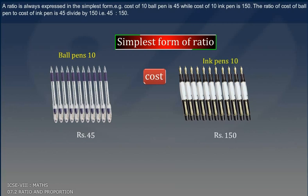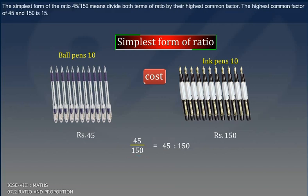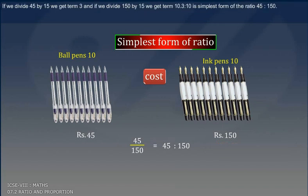The ratio of cost of ball pen to cost of ink pen is 45 divided by 150, that is 45 is to 150. The simplest form of the ratio 45 by 150 means divide both terms of ratio by their highest common factor. The highest common factor of 45 and 150 is 15, and if we divide 150 by 15, we get term 10.